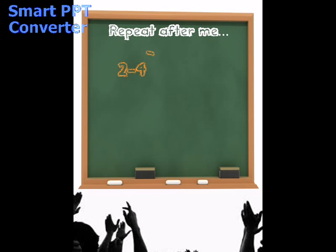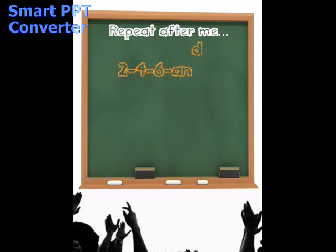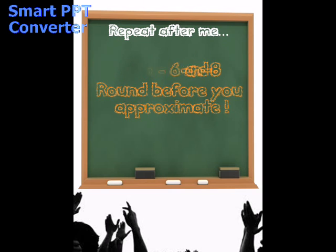Two, four, six, and eight. Round before you approximate. I said two, four, six, and eight. Round before you approximate. Peace out.